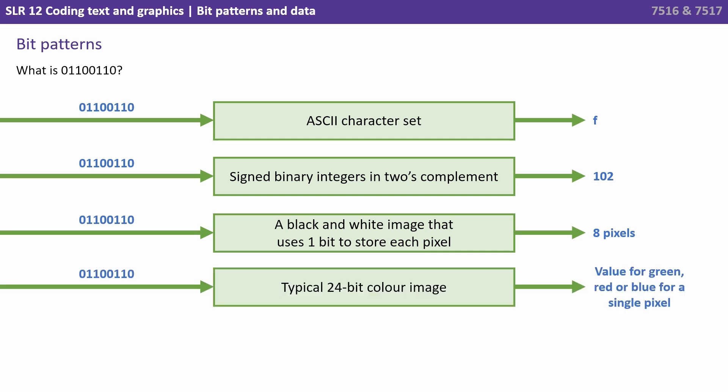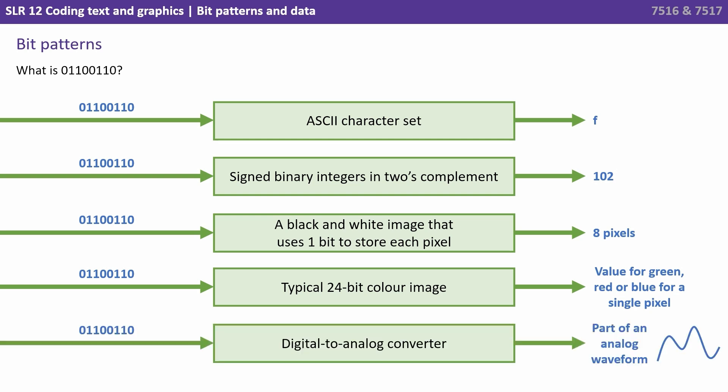Let's say this was now a 24-bit colour image — the exact same pattern of 0s and 1s would be able to specify the given value and colour hue for either the green, red or blue values of a single pixel. And if we threw that sequence of 0s and 1s into a digital to analogue converter, it would actually form part of an analogue waveform. The point is, you cannot tell what a given bit pattern represents — it can indeed represent many different things. It all depends how we interpret and translate that pattern of binary digits.